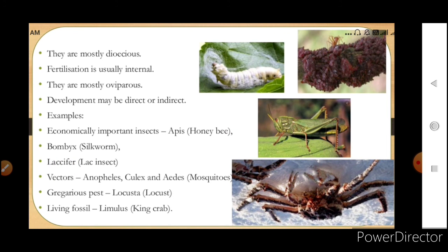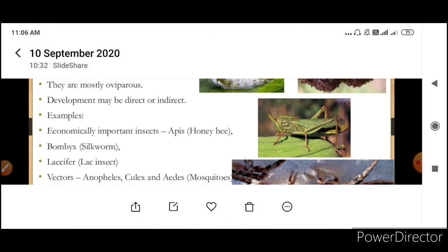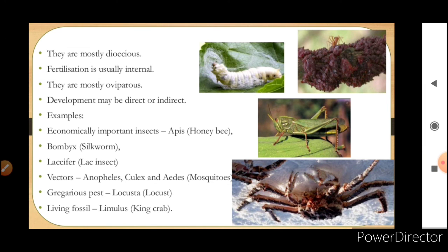They are mostly dioecious, meaning sexes are separate. Fertilization is usually internal. They are mostly oviparous (egg-laying animals). Development may be direct or indirect.